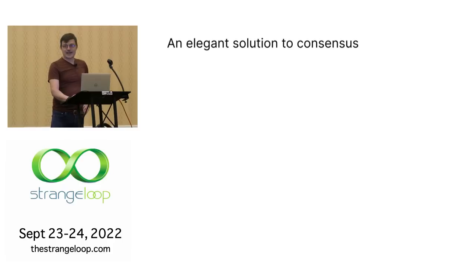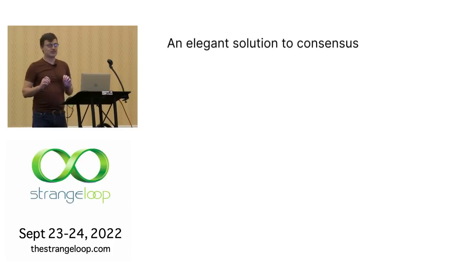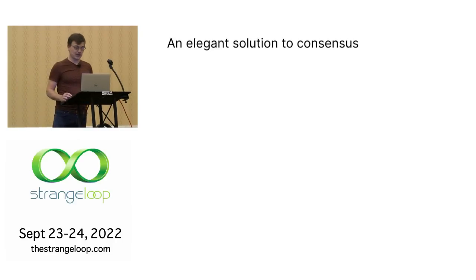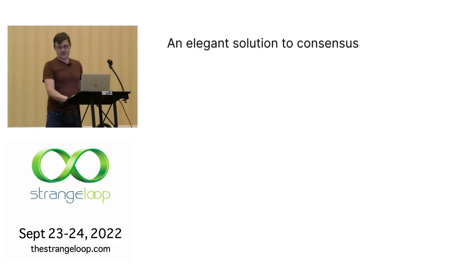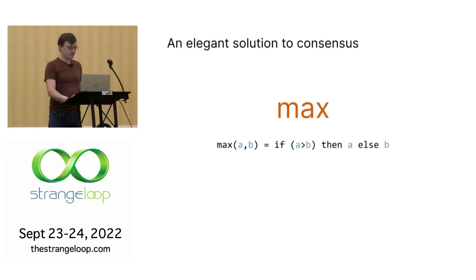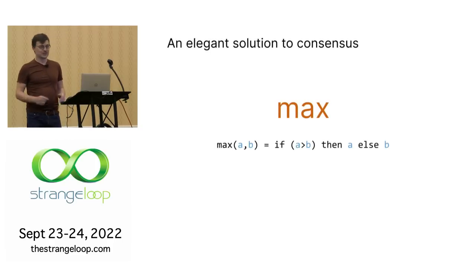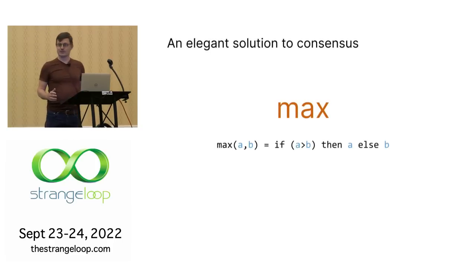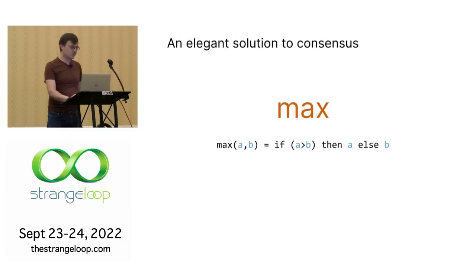It turns out there is an incredibly elegant consensus algorithm that I completely fell in love with when I saw it. It is decentralized, and you only need one function. Let's take the max function — the standard maximum value of two numbers, taking the largest of two integers.